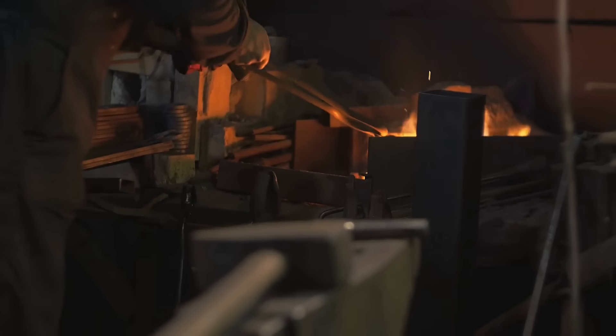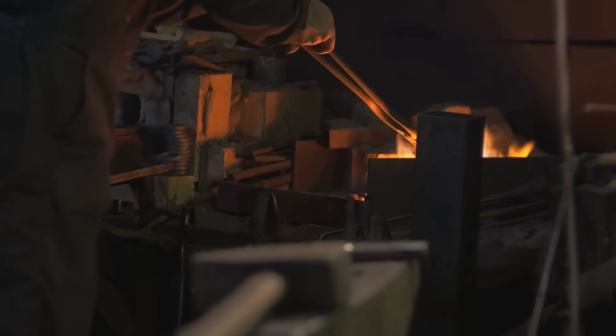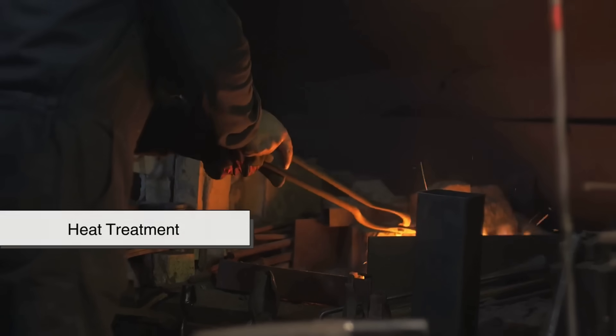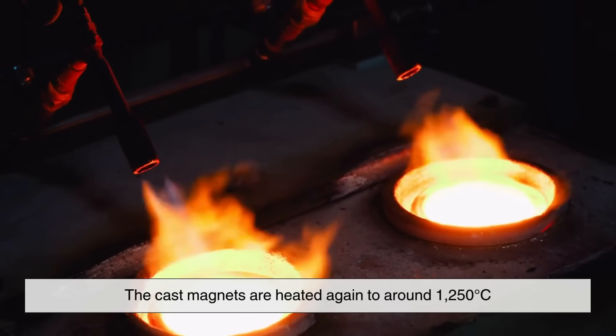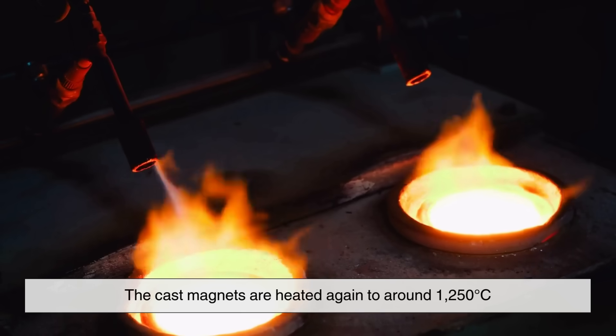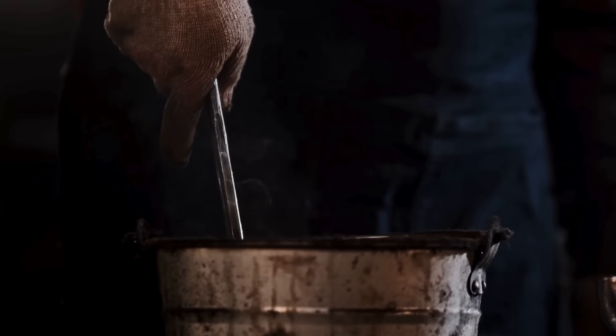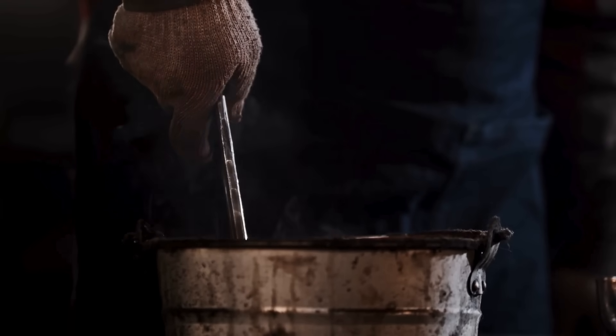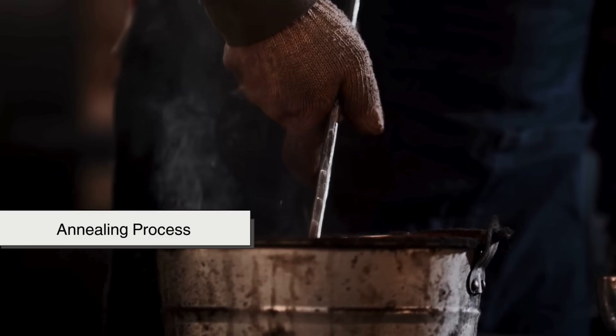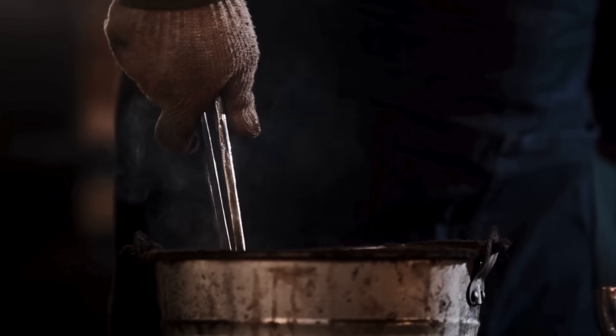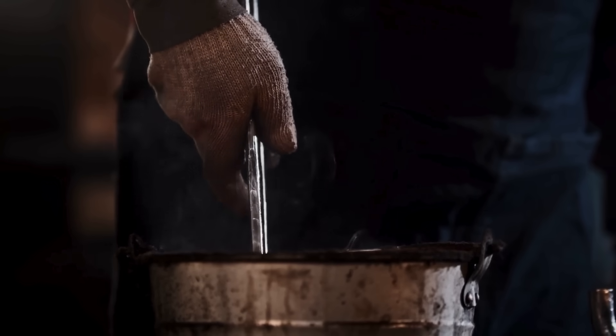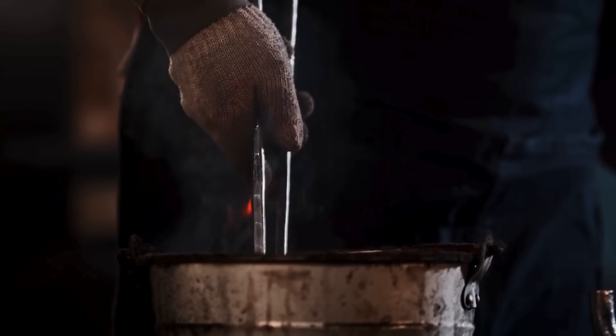After casting, the metal pieces, still not yet magnets, undergo a process called heat treatment. The cast magnets are heated again to around 1,250 degrees Celsius and then slowly cooled in a controlled manner. This annealing process helps refine the internal structure of the metal, improving its mechanical strength and making it easier to magnetize later.